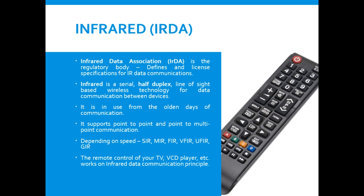Serial Infrared was used in the early days with a maximum speed of 100 Kbps. It was then upgraded to MIR at 1 Mbps. Very Fast Infrared supports up to 16 Mbps, and nowadays Giga Infrared supports up to 1 Gbps.